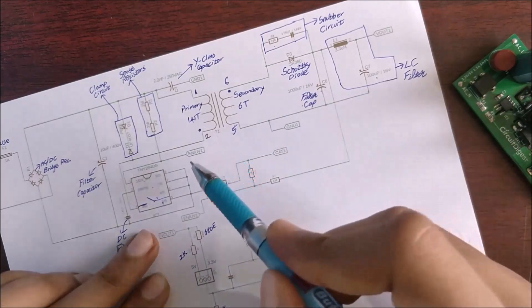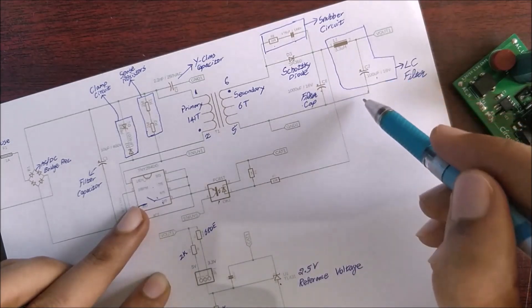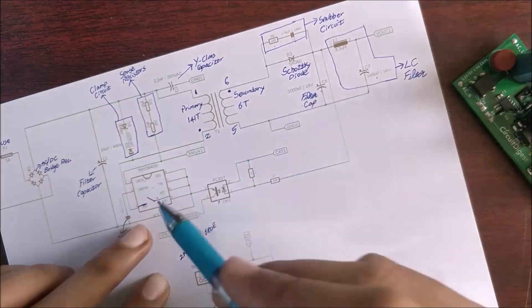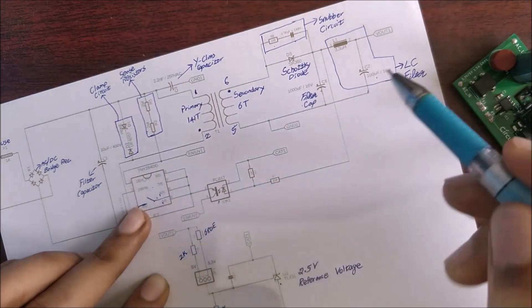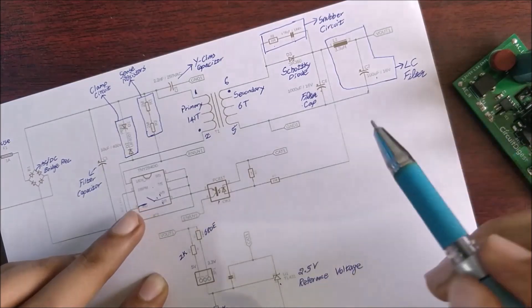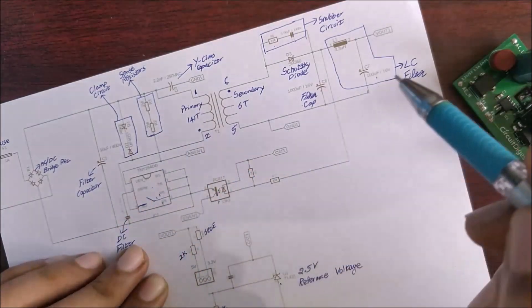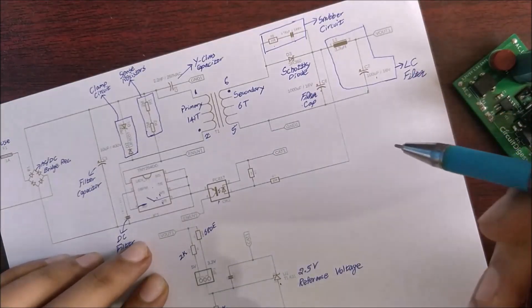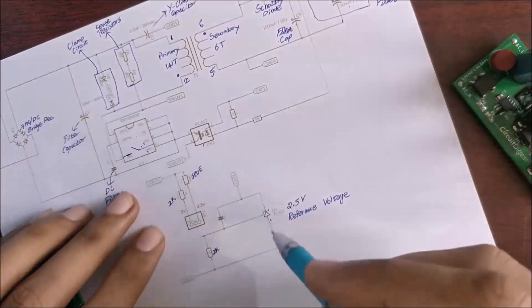For example if we are trying to maintain 5 volts, if the voltage is more than 5 volts then we will ask our controller to turn off the primary side and thus the voltage on the secondary side will go down. If the voltage is less than 5 volts then we will ask our primary side to turn on using this controller and then the voltage on the secondary side will increase. That way by switching this primary on and off we can maintain the secondary at 5 volts.